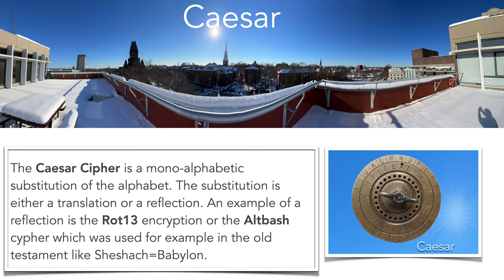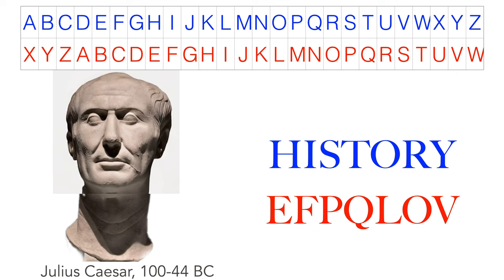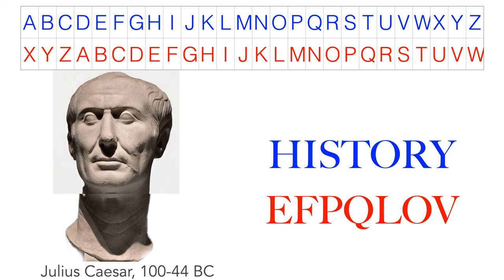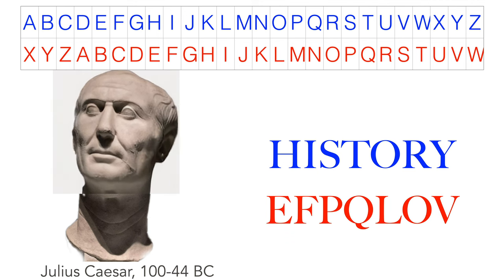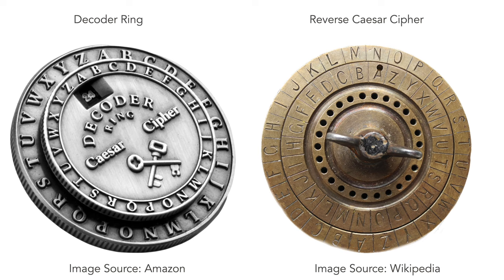The Caesar cipher is used for hiding answers to questions or preventing spelling out a word. It's easy to break by statistical analysis. Here's an example with the original Caesar shift by three — the encryption is easy to crack. Decoder rings or disks were used to encrypt or decrypt. To the right we see a reflection permutation; the symmetry line is the divider between U and T.